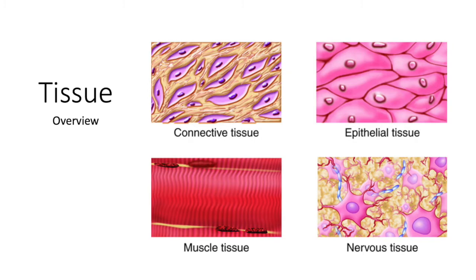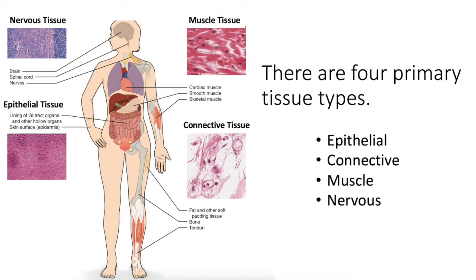Let's start talking about tissue. This module is pretty intense — we talk about the four primary tissue types, and within each primary tissue type there are subtypes. For each of the tissues and subtypes, you will need to know what it looks like, what the structure of that tissue is, where you would find that tissue, the location, and then the very specific function of that tissue.